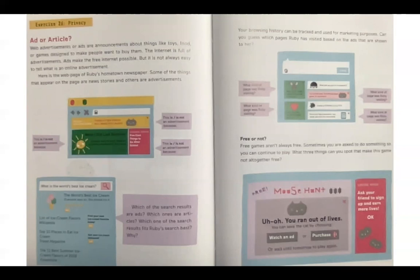Sponsored content. Five cool things to do after school. This is or is not an advertisement because... Search bar says, what is the world's best ice cream? The world's best ice cream. Everyone says so. You should try it. Add. List of ice cream flavors. Wikipedia. Find your next ice cream favorite today. Add. The 10 places to eat ice cream. Travel Magazine. Get your ice cream delivered. Add. The 11 best summer ice cream flavors of 2018. Food store. Which of the search results are ads? Which ones are articles? Which one of the search results fits Ruby's search best?